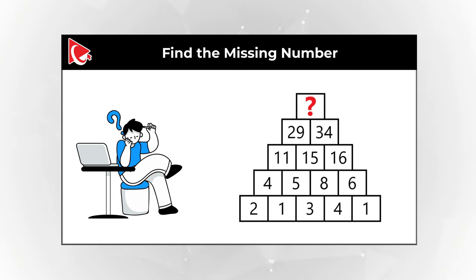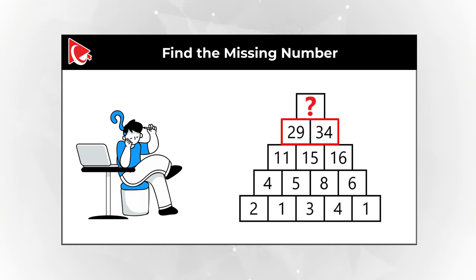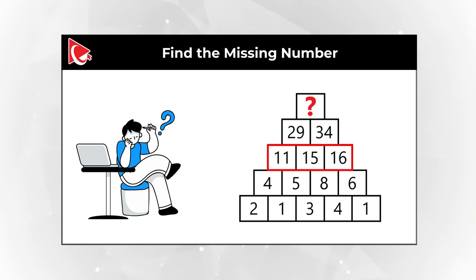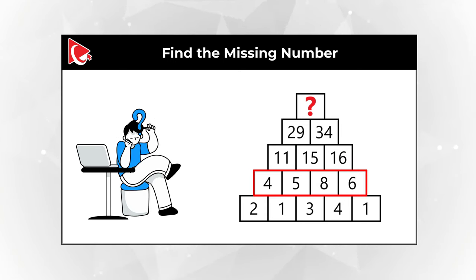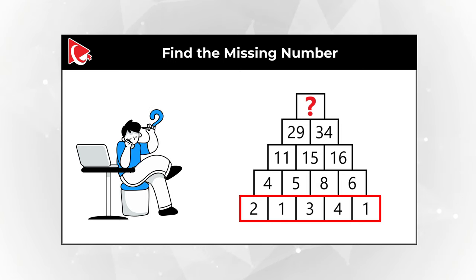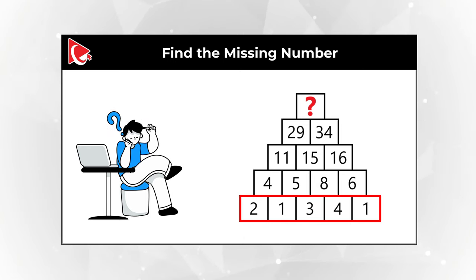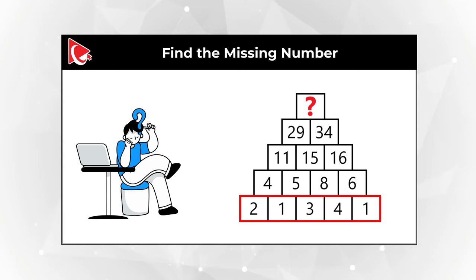the second row contains numbers 29 and 34. The next row contains numbers 11, 15, and 16. The following row has numbers 4, 5, 8, and 6. And then the last row has numbers 2, 1, 3, 4, and 1.